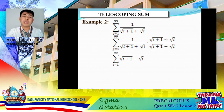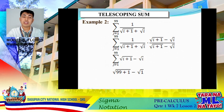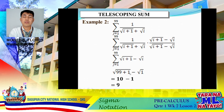Applying telescoping sum, we substitute the upper bound (99) for the first term and the lower bound (1) for the final term. We get √(99+1) − √1 = √100 − 1 = 10 − 1 = 9. Therefore, the summation of 1/(√(i+1) + √i) as i goes from 1 to 99 equals 9.